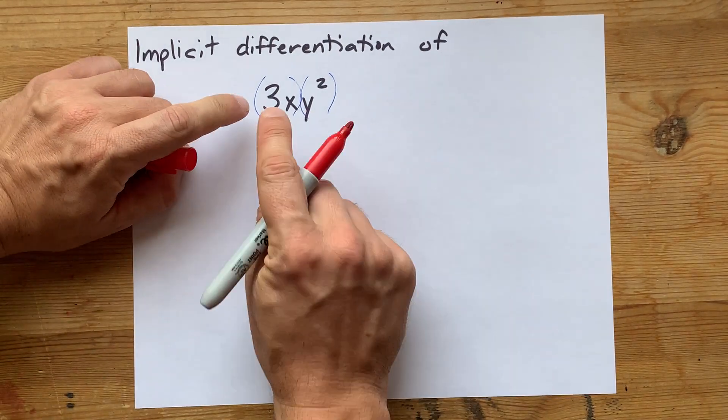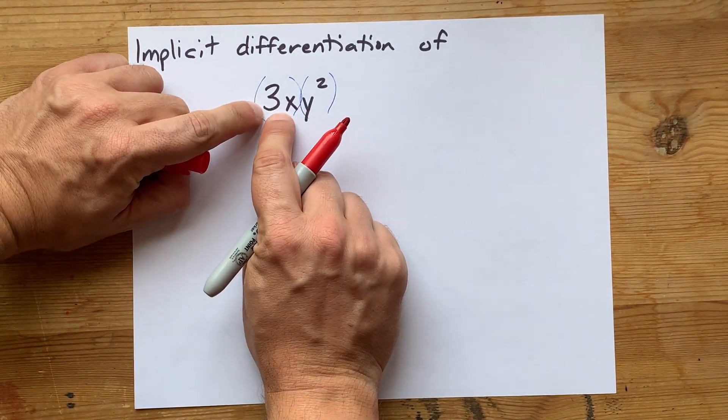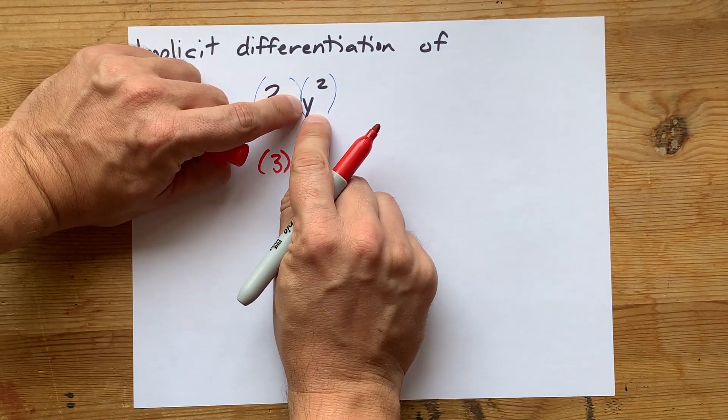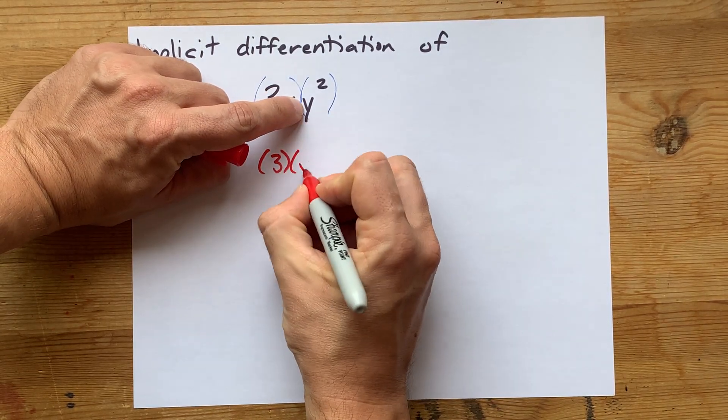And product rule is derivative of the first thing, derivative of 3x is just 3, times the second thing as is. So that's y squared.